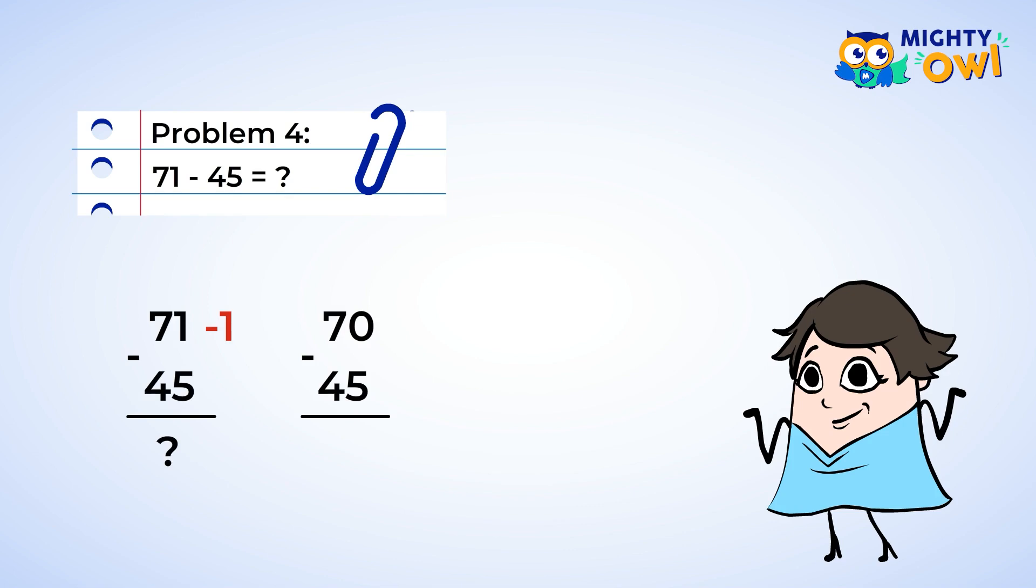Seventy minus forty-five is twenty-five. But what about that one we took away from seventy-one? We need to add that back in to give us a final answer of twenty-six.